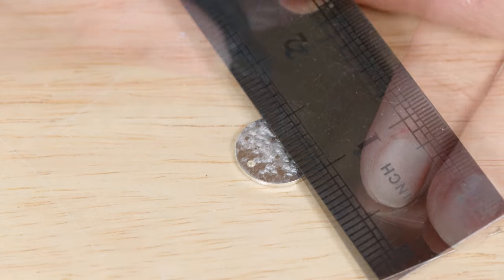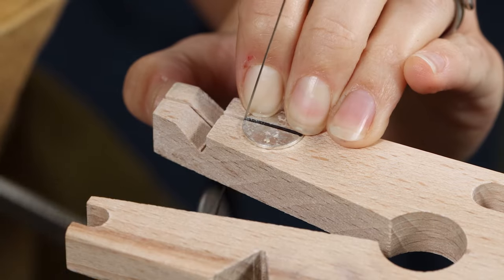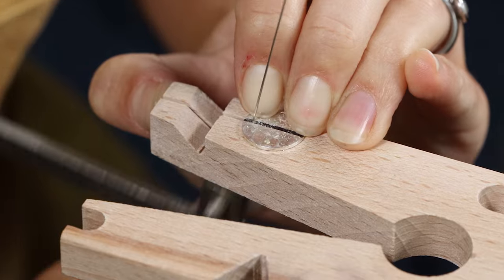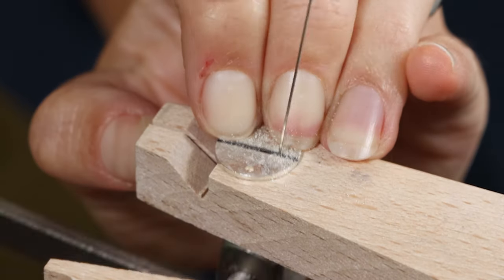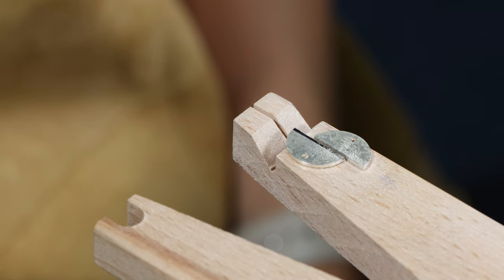Draw a line down the middle of one of the discs using a scribe or pen. Rest the silver disc on a bench peg and use a piercing saw to cut along the line, cutting the disc in half. This should make two semi-circles.